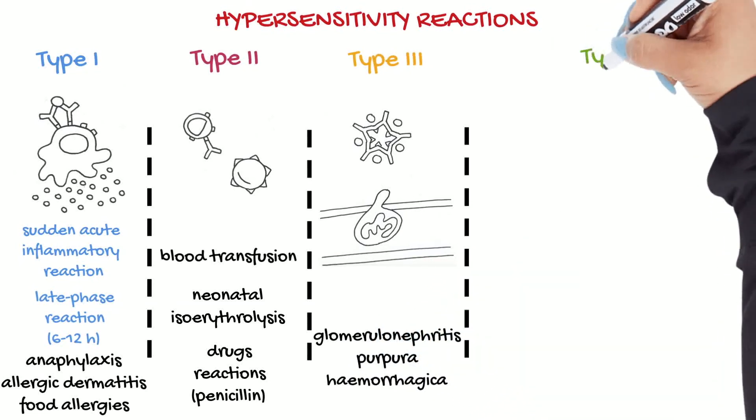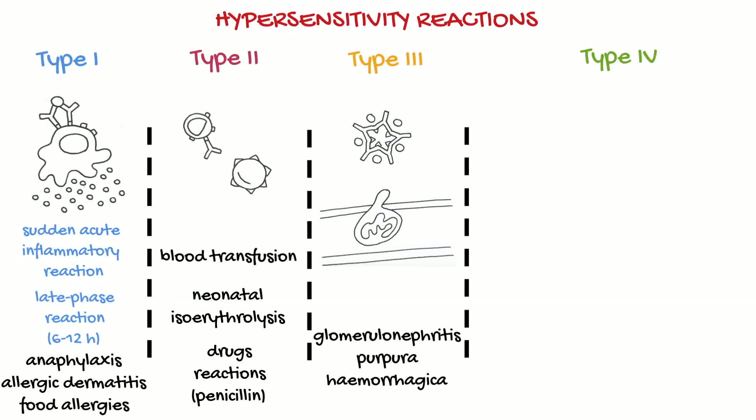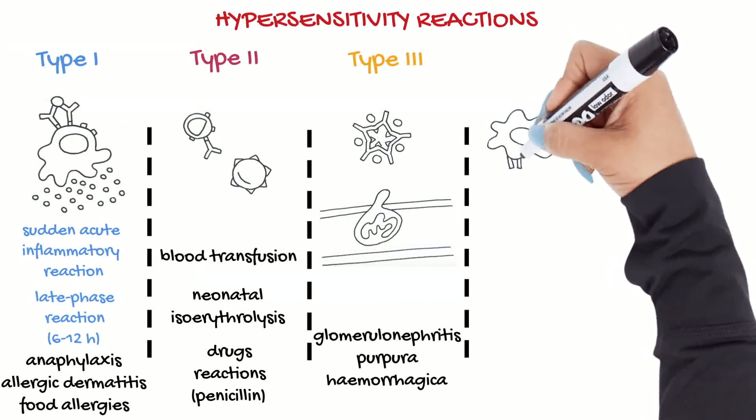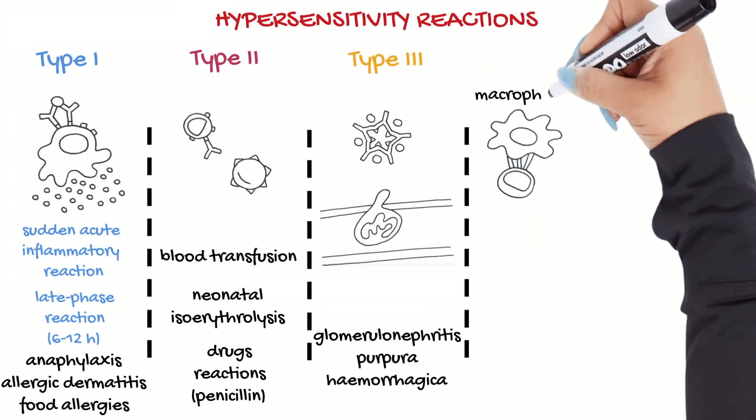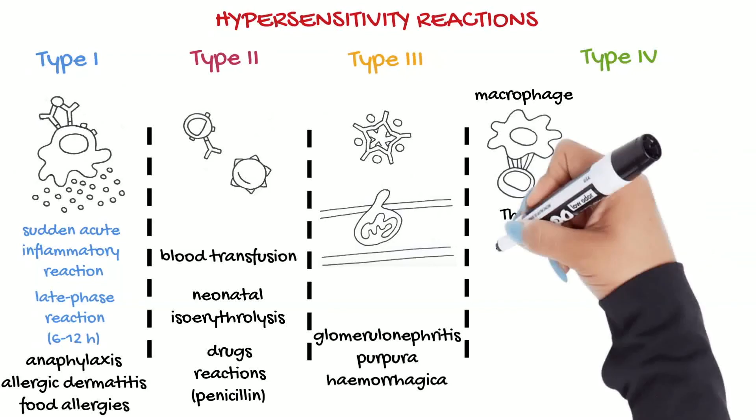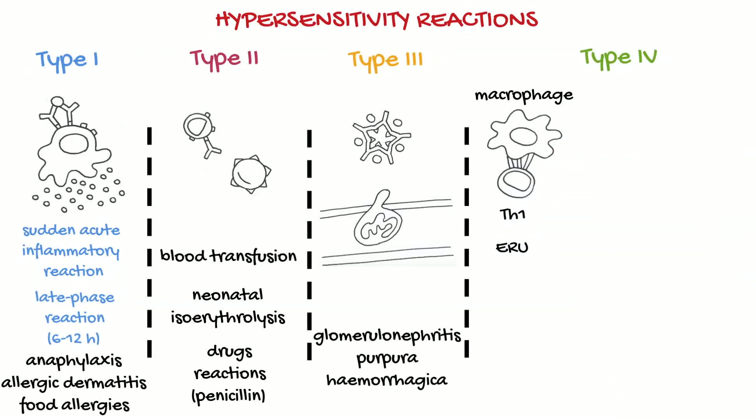Type 4 hypersensitivity is characterized by delayed reactions that result from interaction of an antigen, an antigen-presenting cell, and T cells. Depending on the type of antigen-presenting cells, different mediators and pathways are activated.